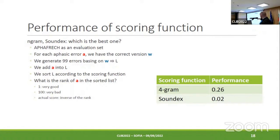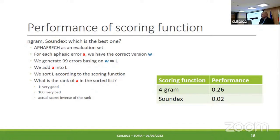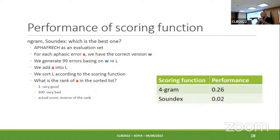Here is the performance of the scoring function. To measure this performance, we generate many pseudo-aphasic errors starting from a correct word, insert the truly aphasic error in the list, and sort the list according to the measure. Normally, if the measure is good, the truly aphasic error should come at first rank. The four-gram function gives better results than Soundex, because Soundex has only four values and the measure is not very precise.